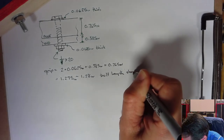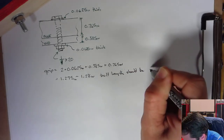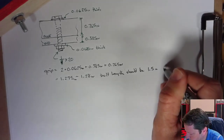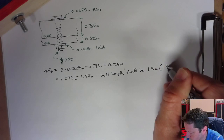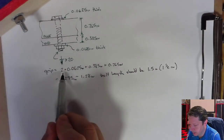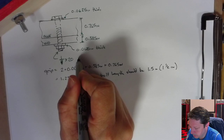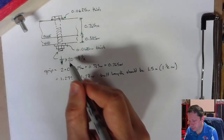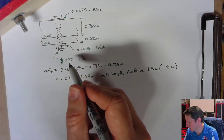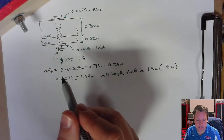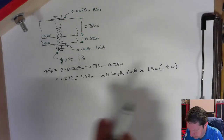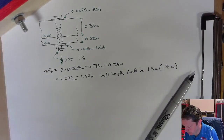The bolt length is 1.5 inches. Normally you'd write this as the fractional size: a quarter-20 by one and a half. The 20 is threads per inch, confirming coarse thread. Our grip variable l is 1.28 inches — that's what we need going forward.